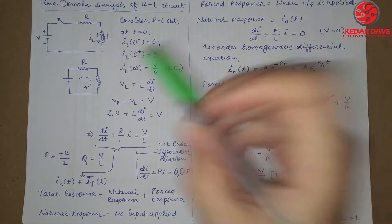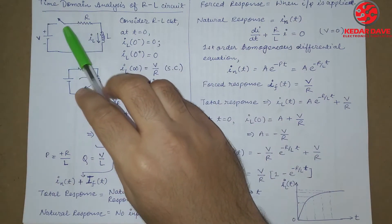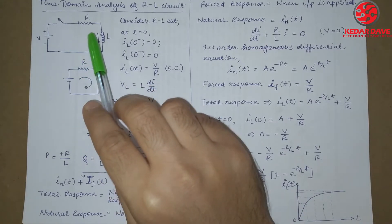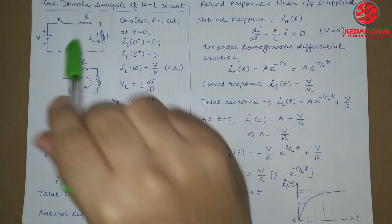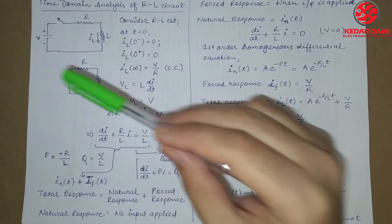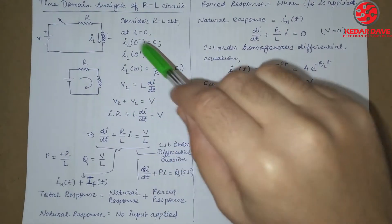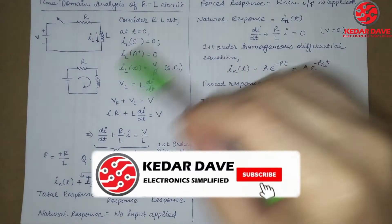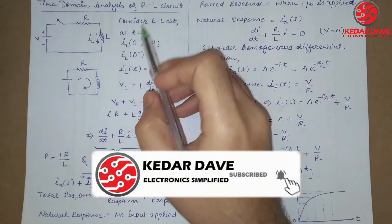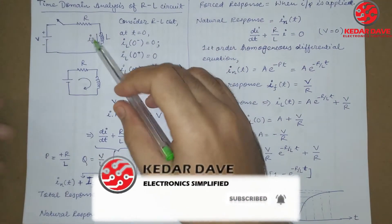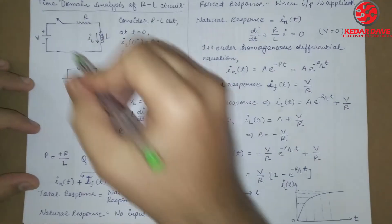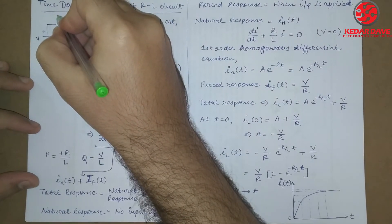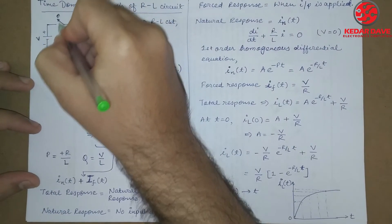As you can see, there is a circuit where a resistor and inductor are connected. Here is the RL circuit which we have seen. We will now understand this. In the starting, there is a switch — at t equals zero condition, the switch is open.